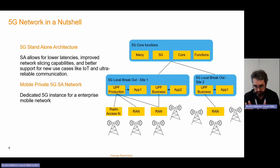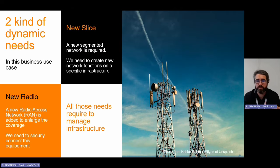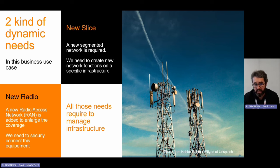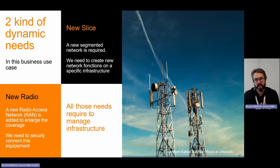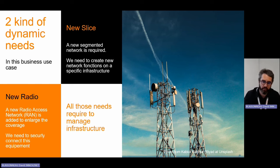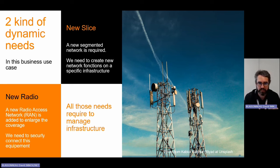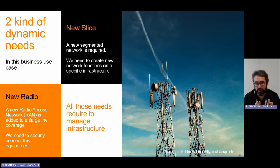We have two kinds of dynamic needs. It's not only 5G core functions in Kubernetes, but we also have to deal with the creation of a new slice. This new slice is a new segmented network — clearly a new deployment inside the deployment, a new function deployment. It's not a virtual host in an Apache; it's another Apache, for example. It's a new deployment of a new application in a new path to ensure we have a specific, secure router for a specific need.